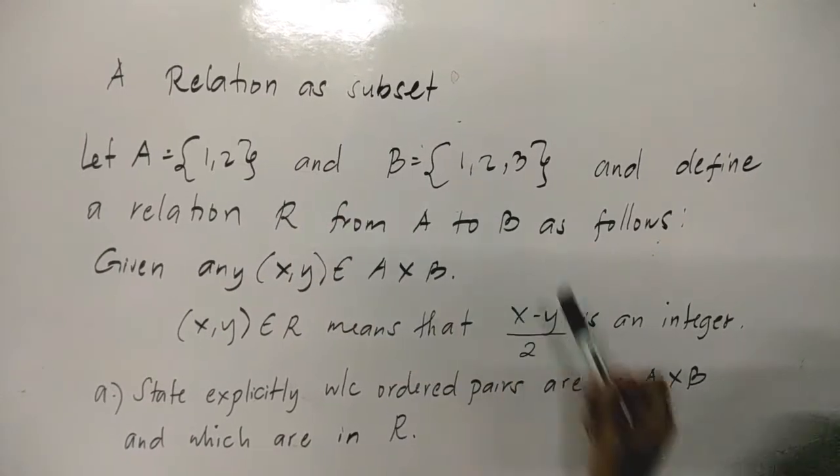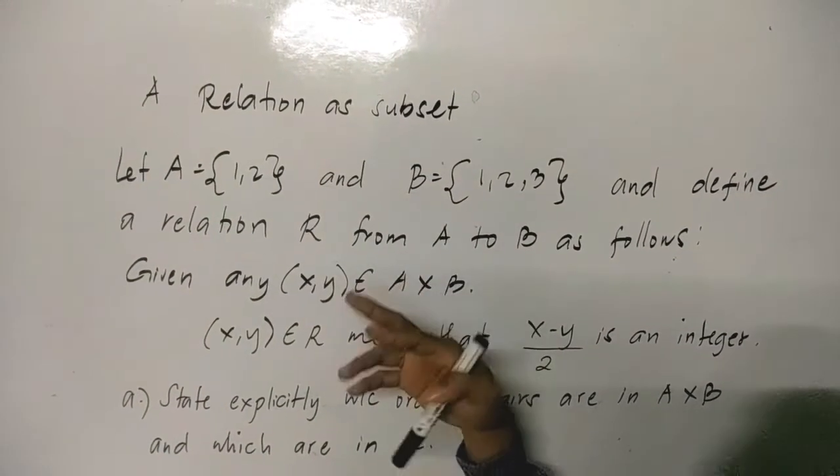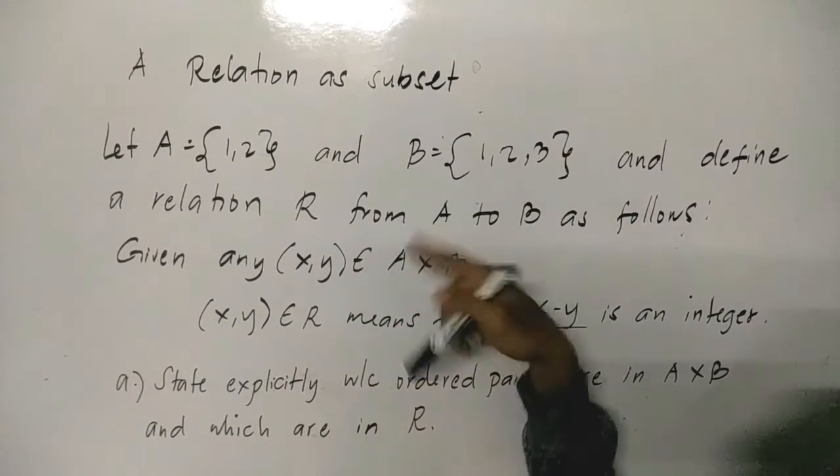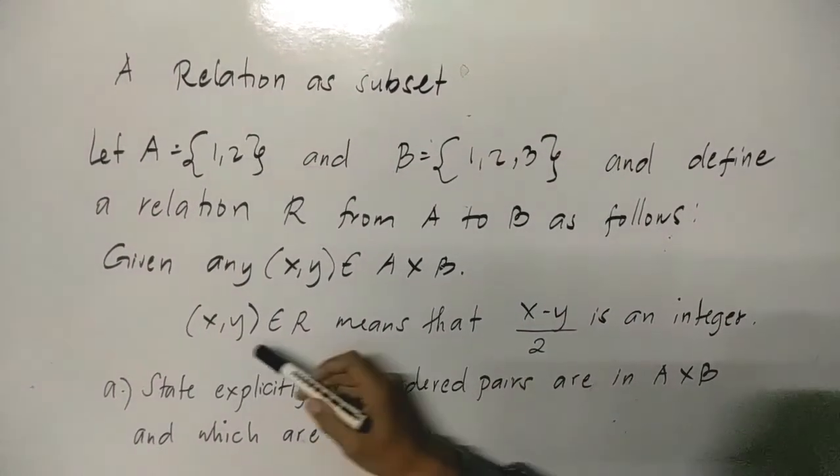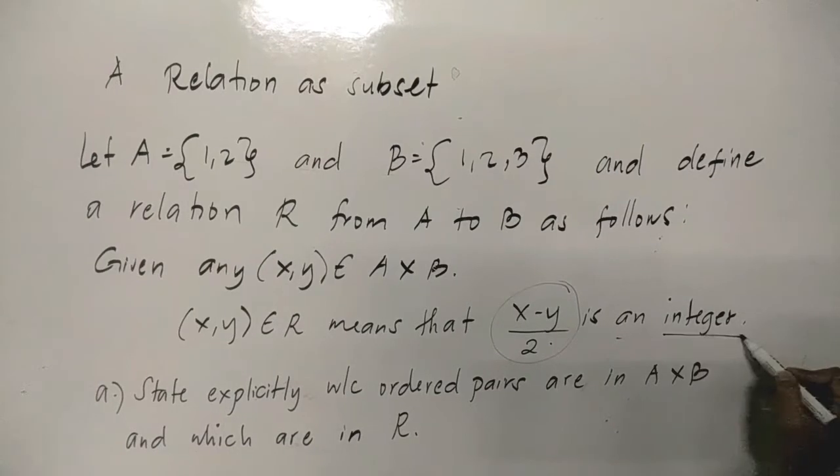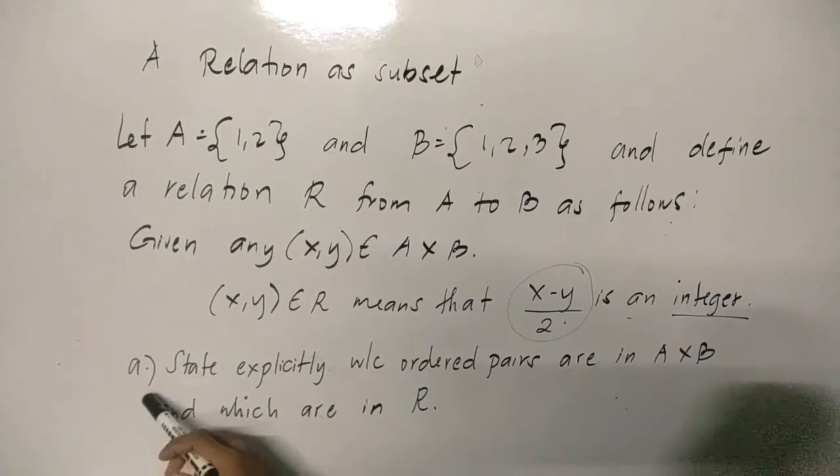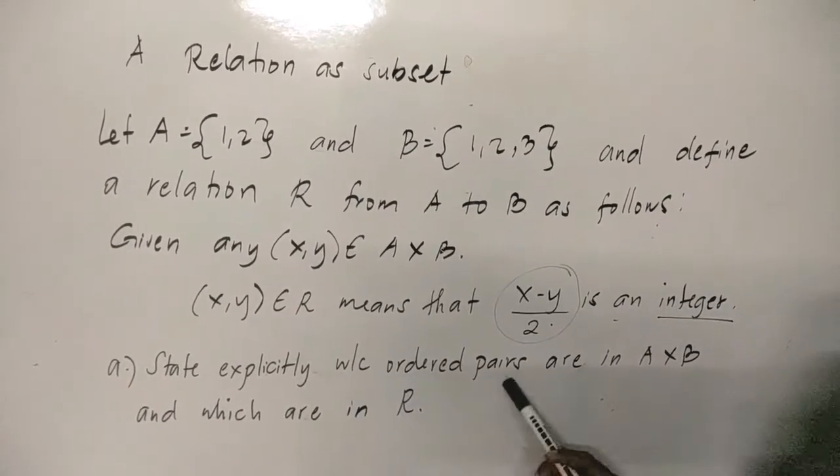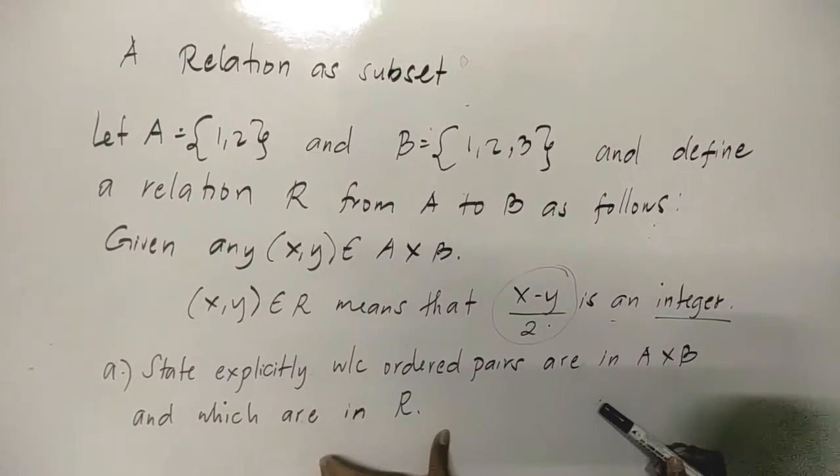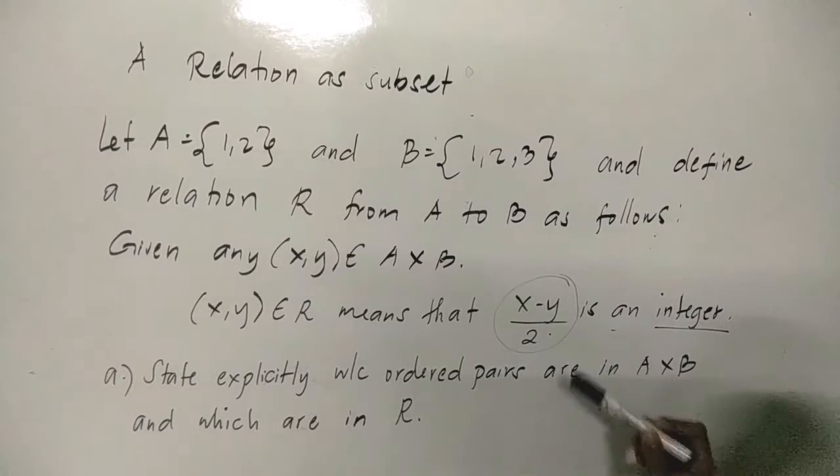To make it easier to understand: if one person, for instance, is related by blood - like a son and parents - they're related by blood. In this subset or set, x and y will be related in this specific example when this formula produces an integer. We have letter A: State explicitly which ordered pairs are in A × B and which are in R. So we'll find the related ordered pairs by means of this formula (x - y)/2.